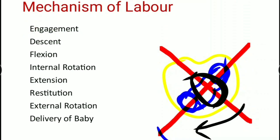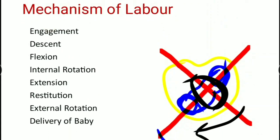Then flexion - the pelvic floor muscles provide resistance from downwards upward. Next is internal rotation, where the child's head is rotated to align its longest diameter in the pelvis so it can come out easily. Then extension - by extension only, the fetus head is delivered out.